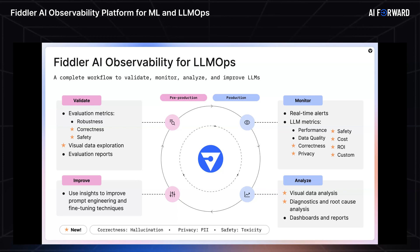These metrics fall in the buckets of performance, data quality, correctness, privacy, and safety. You can chart them in different kinds of dashboards, as Sabina showed earlier. You can also do a deeper analysis using the analyze and UMAP visualization — we have vectors representing the LLM's prompts, responses, and context in high-dimensional space. We provide tooling to visualize and get a high-level view of what's happening with your production data, including analysis for PII loss and toxicity.